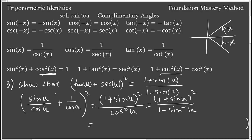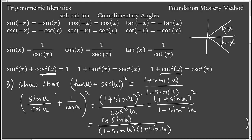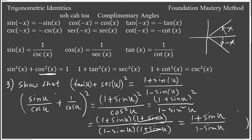We can factor 1 minus sine squared u as a difference of squares: (1 − sin u)(1 + sin u). In the numerator we have (1 + sin u) squared, which we write as (1 + sin u)(1 + sin u). One factor of (1 + sin u) cancels with the denominator factor, giving us (1 + sin u) / (1 − sin u). We are done.